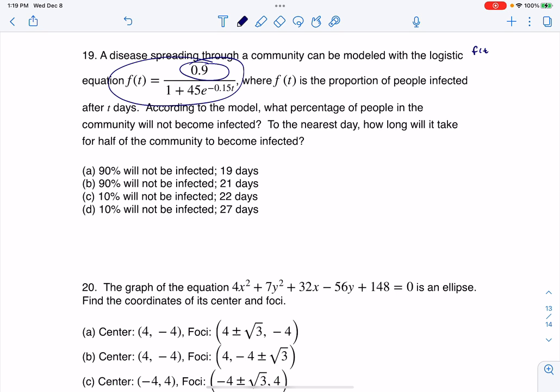Keep in mind, we've been talking about a logistic model. It's usually C plus 1AE to the negative BT, and we pretty much have that form right here. So C would be 0.9, A is 45, B is 0.15.